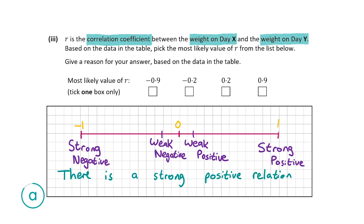Placing our values on the number line: minus 0.9 is near strong negative, minus 0.2 is weak negative, plus 0.2 is weak positive, and 0.9 is near strong positive. We can clearly see that 0.9 indicates a strong positive relationship. Our answer is 0.9, as that's closest to 1 — a value of 1 would mean a perfectly strong positive relationship. That's our answer for part A3, worth 5 marks.